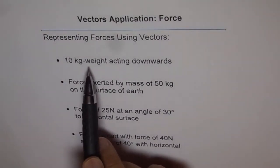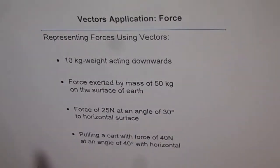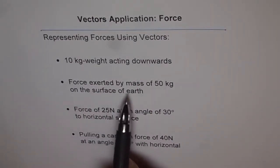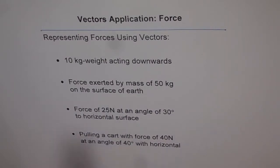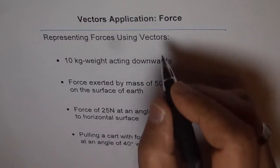It says 10 kg weight acting downwards. Then force exerted by mass of 50 kg on the surface of the earth. Force of 25 N at an angle of 30 degrees to horizontal surface. Pulling a cart with force of 40 N at an angle of 40 degrees with horizontal. In all these cases, when you draw your vector diagrams, use a scale.